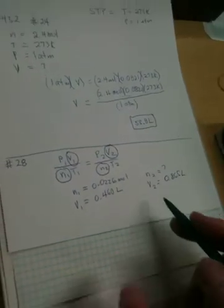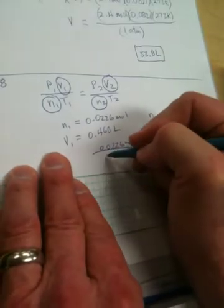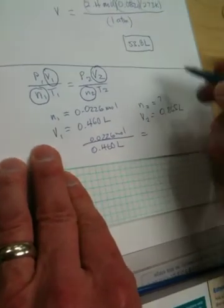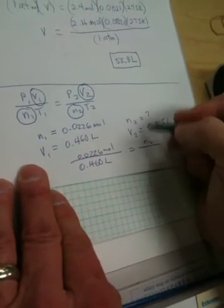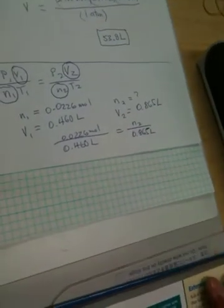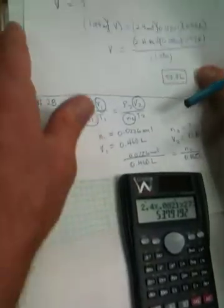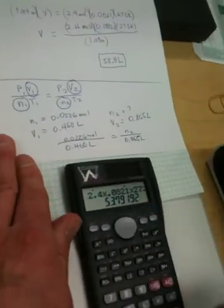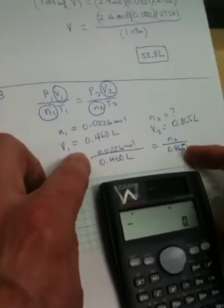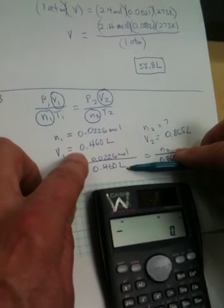And now what we do is we plug these guys in. So we have 0.0226 moles over 0.460 liters is equal to N2 over 0.865 liters. And now we can just solve for N. And the way we would do that, since we can cross-multiply here, and I'm going to do this right on the calculator so you can see everything as we go. We're going to multiply these two guys and then divide by this one.